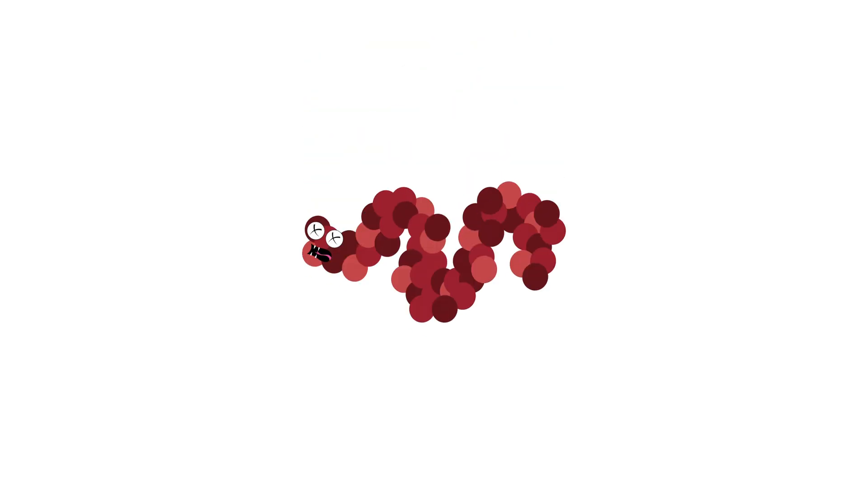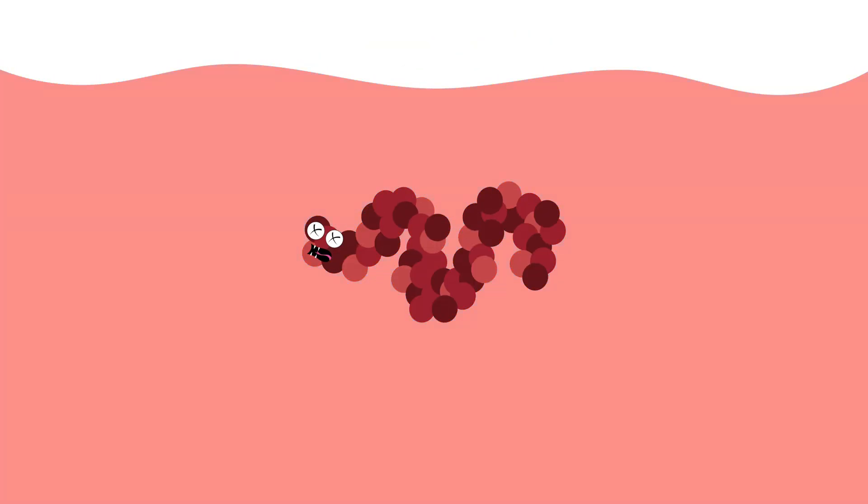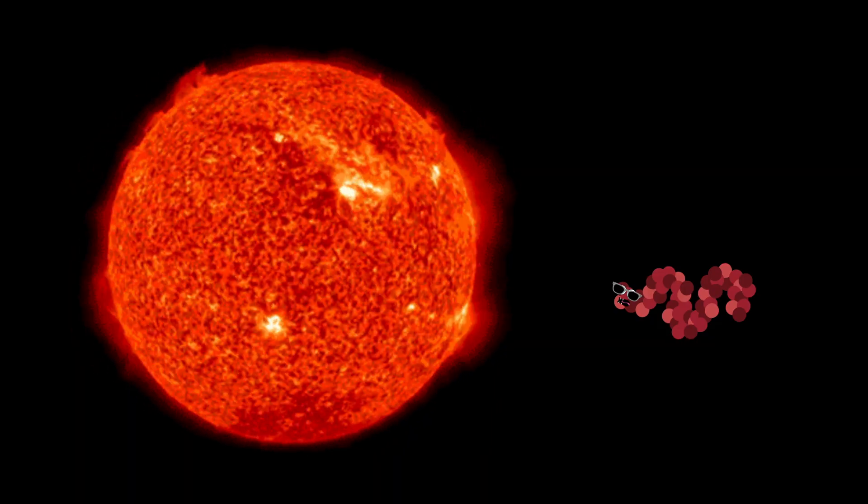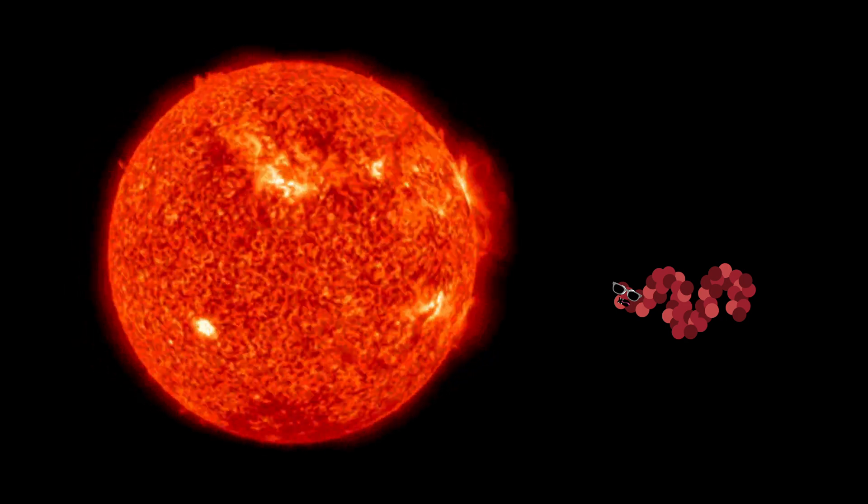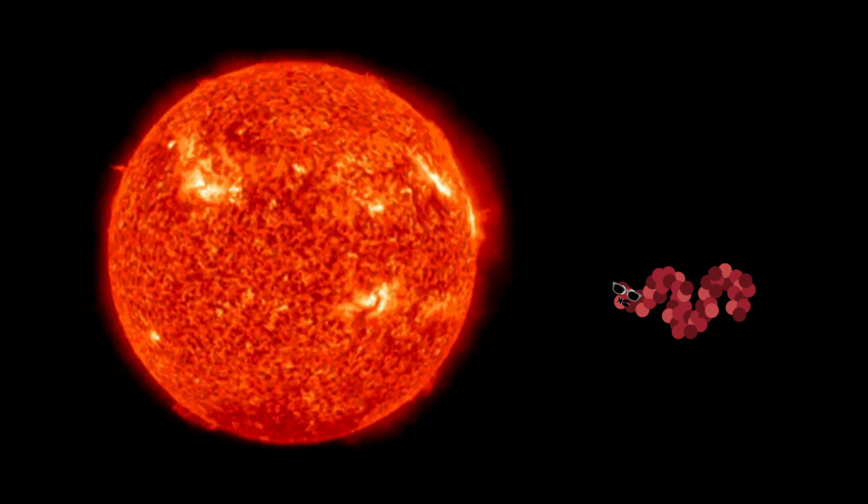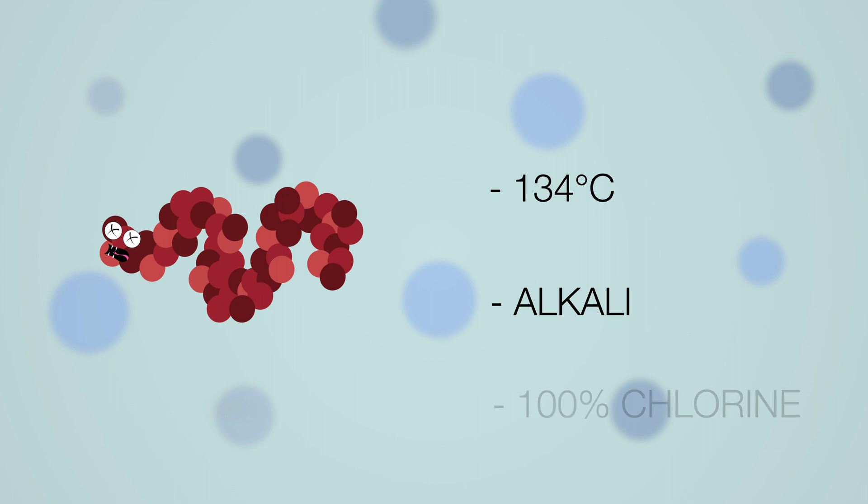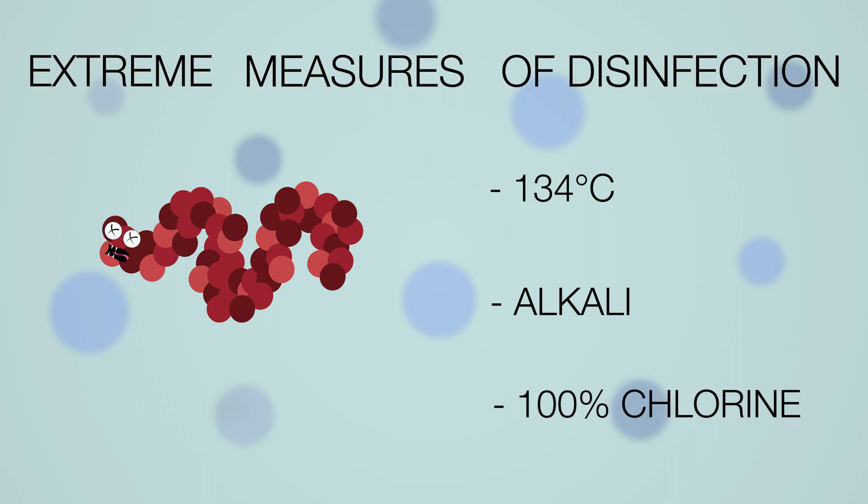Thing is, prions are so stable in their structure that you can't destroy them by boiling, with ethanol, or even radiation. Which is the case for normal proteins, bacteria, or viruses. But you can destroy them at temperatures above 134 degrees Celsius, concentrated alkali, or near 100% concentrated chlorine. Which are pretty extreme measures of disinfection, I must say.